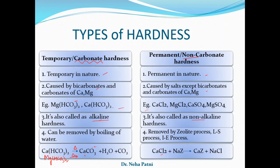Temporary hardness can be removed by boiling. For example, magnesium bicarbonate when heated converts to magnesium hydroxide, releasing CO2. Similarly, calcium bicarbonate converts to calcium carbonate on boiling. These ions get converted into their respective precipitates, which can then simply be filtered out. This is why temporary hardness is easily removable — the ions convert to stable insoluble forms upon heating.